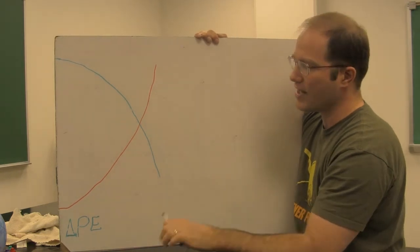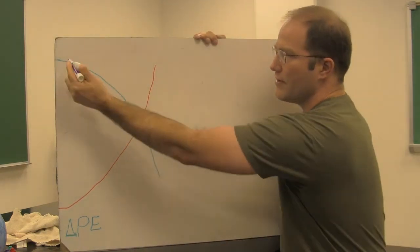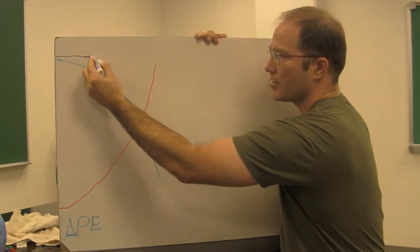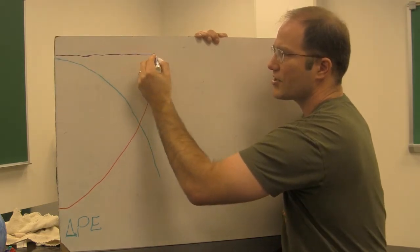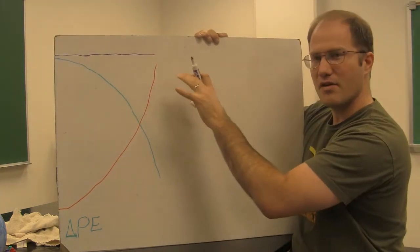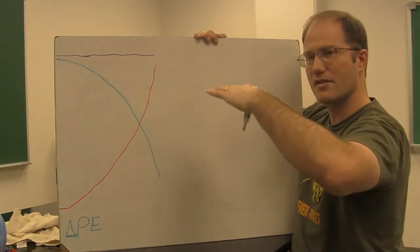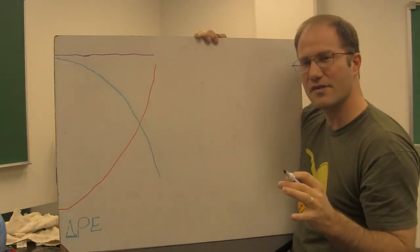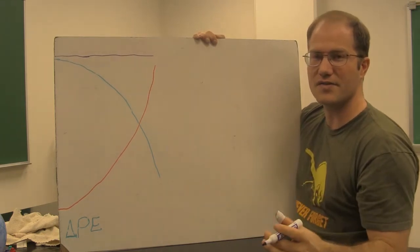And so our total mechanical energy, which is the sum of these two, is going to be a horizontal line showing no change. Actually, let me show a slight change, a slight downhill to this line. There will be a small change in the mechanical energy. It's going to decrease a little bit, and that's because of the non-conservative force of air resistance as the ball falls through the air.